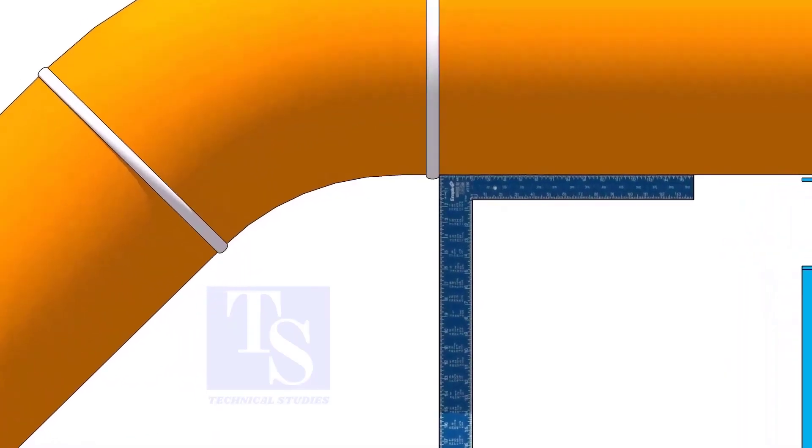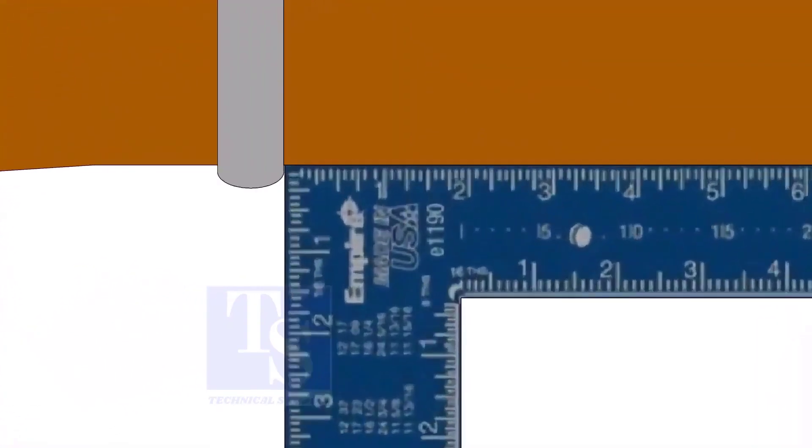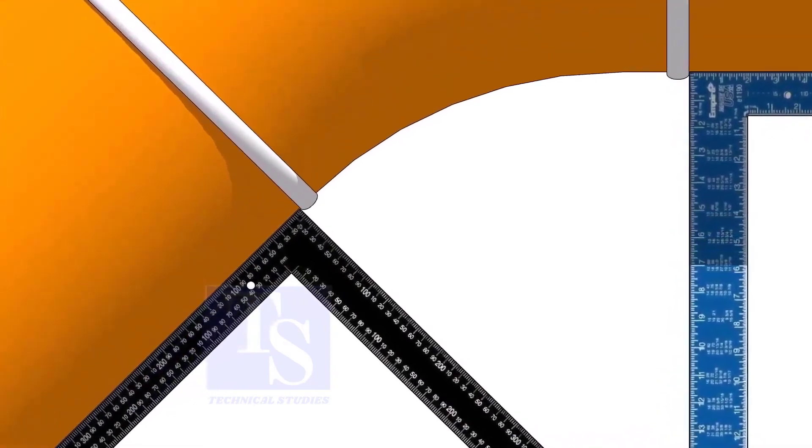Hold one right angle on the pipe just outside the weld joint, as shown. Hold another right angle on the other pipe. Make sure both the right angles are sitting on the center of the pipe.